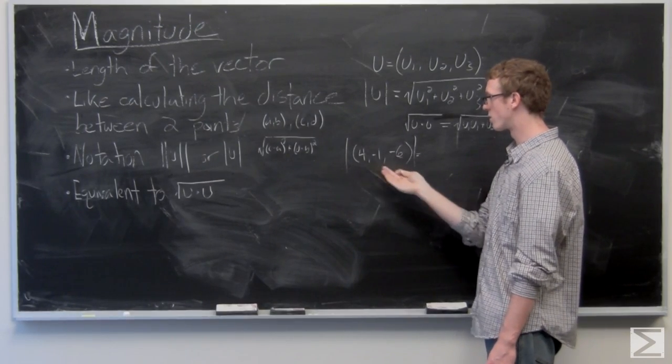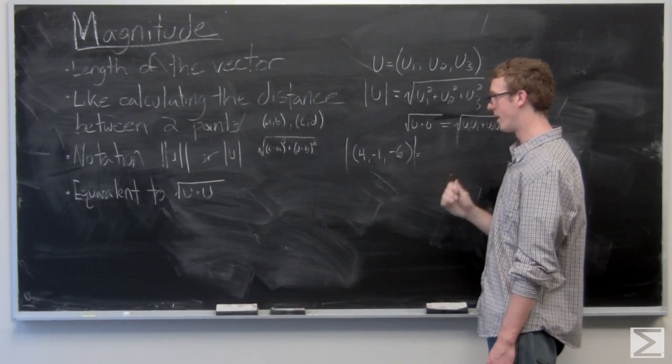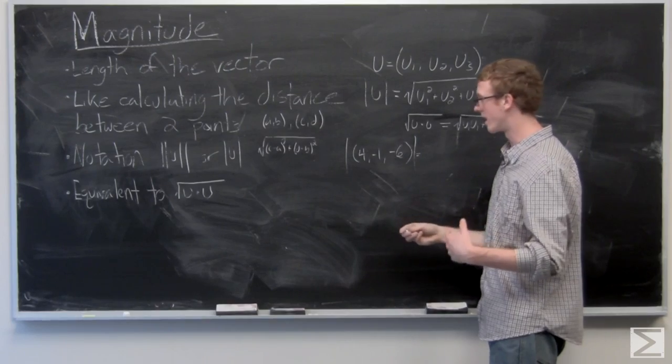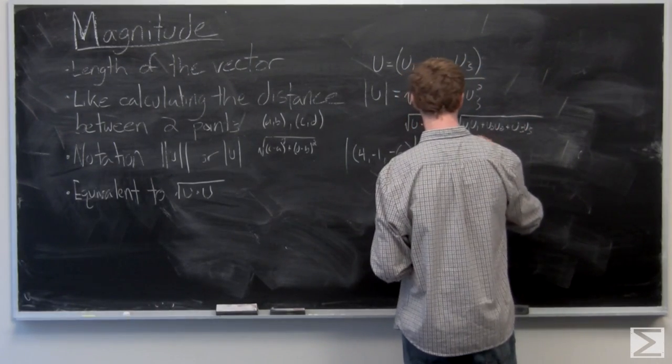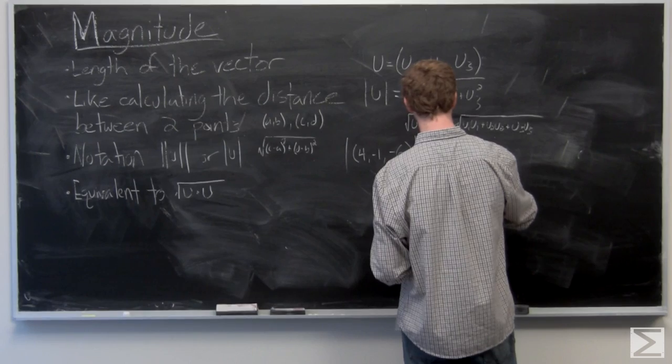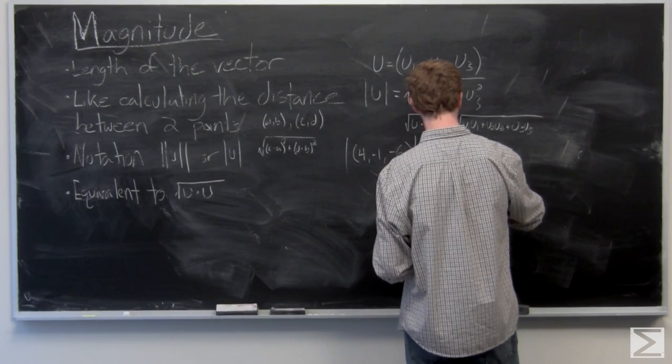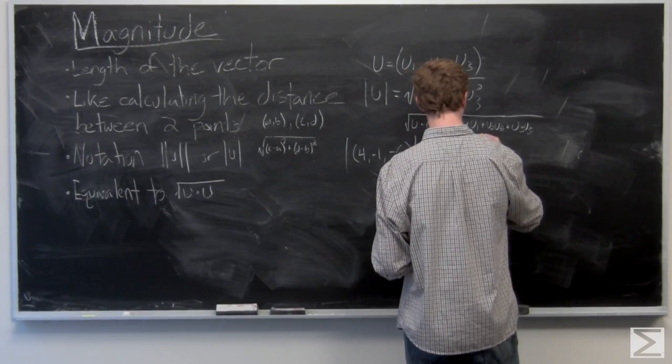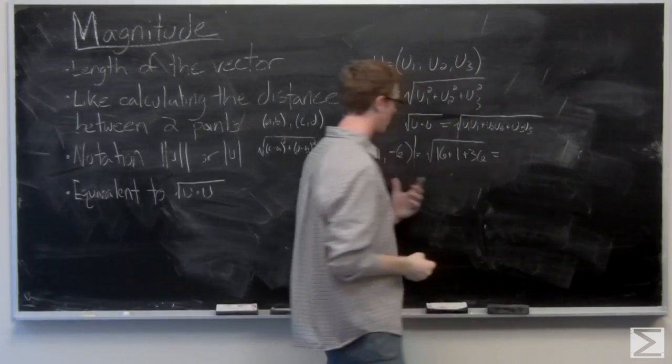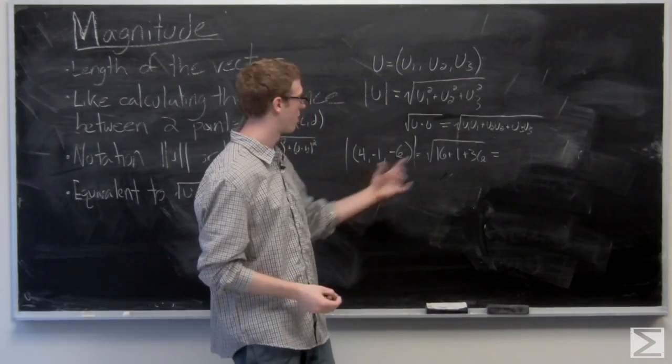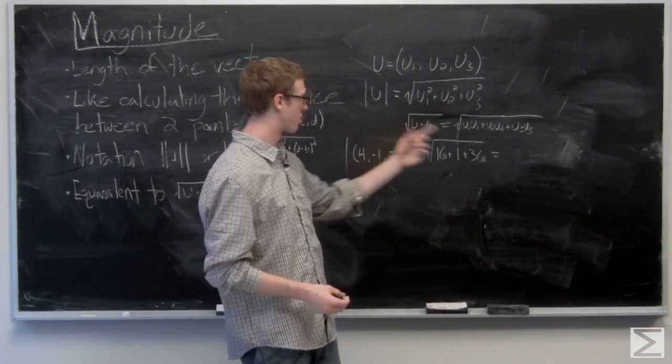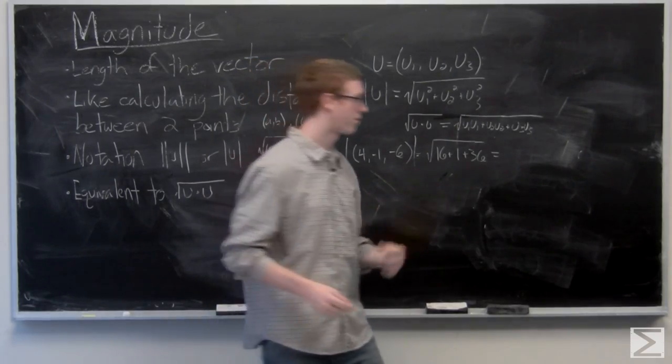Go ahead, 4 squared, negative 1 squared, and negative 6 squared. Add them all together, take the square root. 4 squared is 16, negative 1 squared is 1, negative 6 squared is 36. Add them all together, 53.